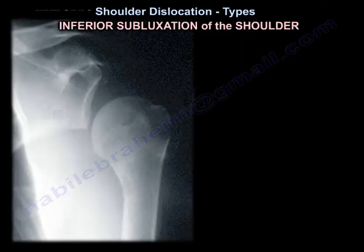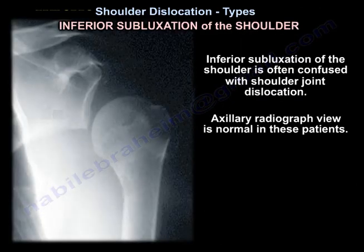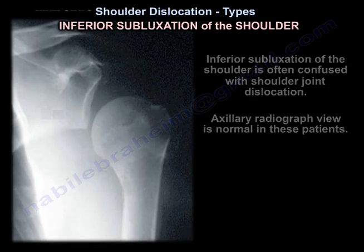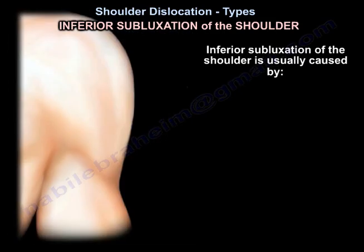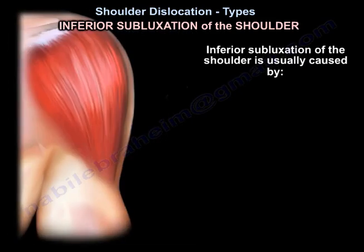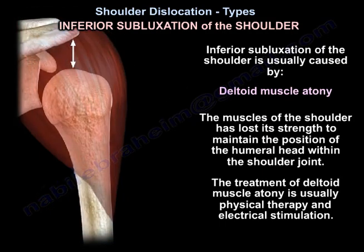Inferior subluxation of the shoulder is often confused with shoulder dislocation, but the axillary radiograph view is normal in these patients. Inferior subluxation is caused by deltoid muscle atony — the muscles of the shoulder have lost their strength to maintain the position of the humeral head within the joint. Treatment is by physiotherapy and electrical stimulation.